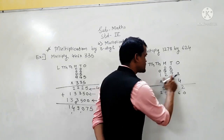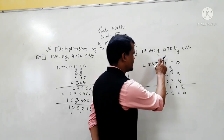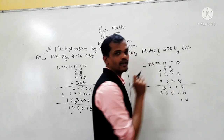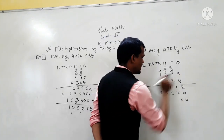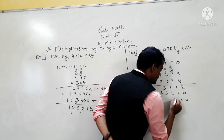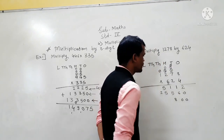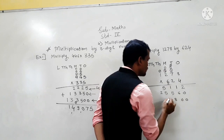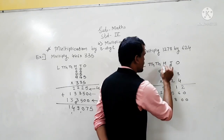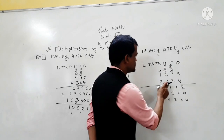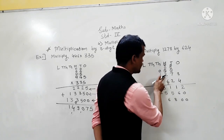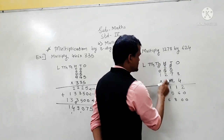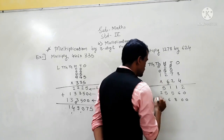Multiply 1278 by 600. So we write 0 at the ones place and 0 at the tens place. Now multiply: 6 eights are 48 — write 8 here and carry 4. Then 6 sevens are 42, 42 plus 4 is 46 — write 6 here and carry 4. Then 6 twos are 12, 12 plus 4 is 16. Then 6 ones are 6, 6 plus 1 is 7.